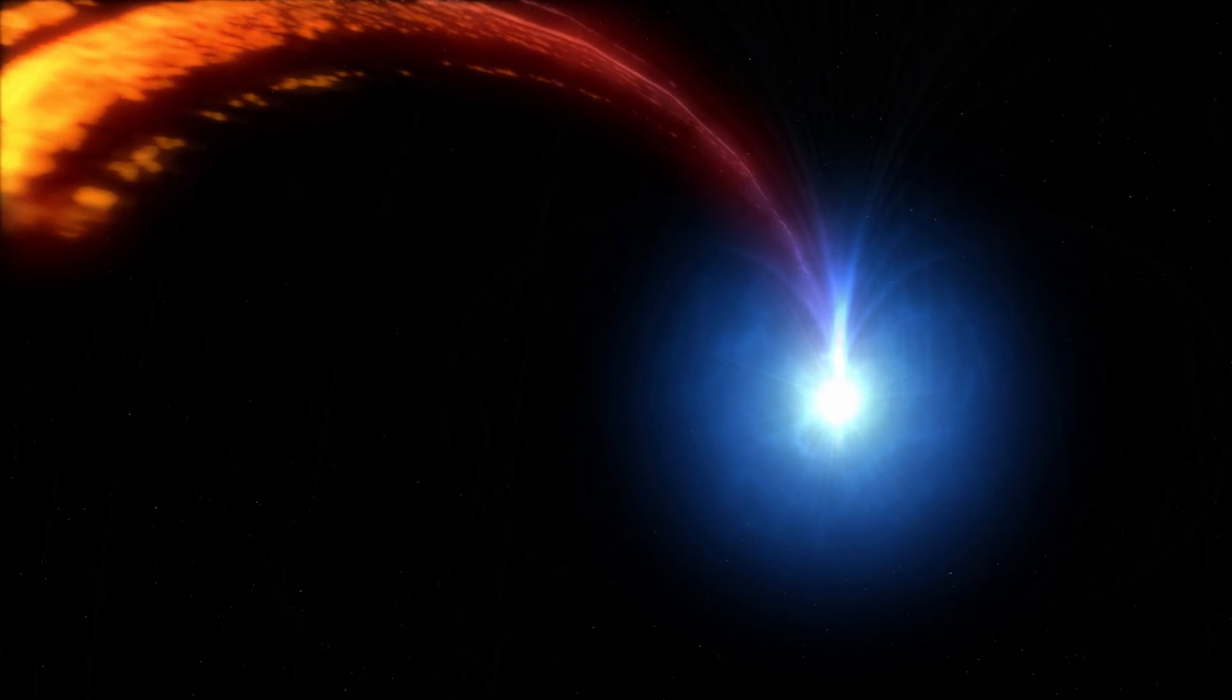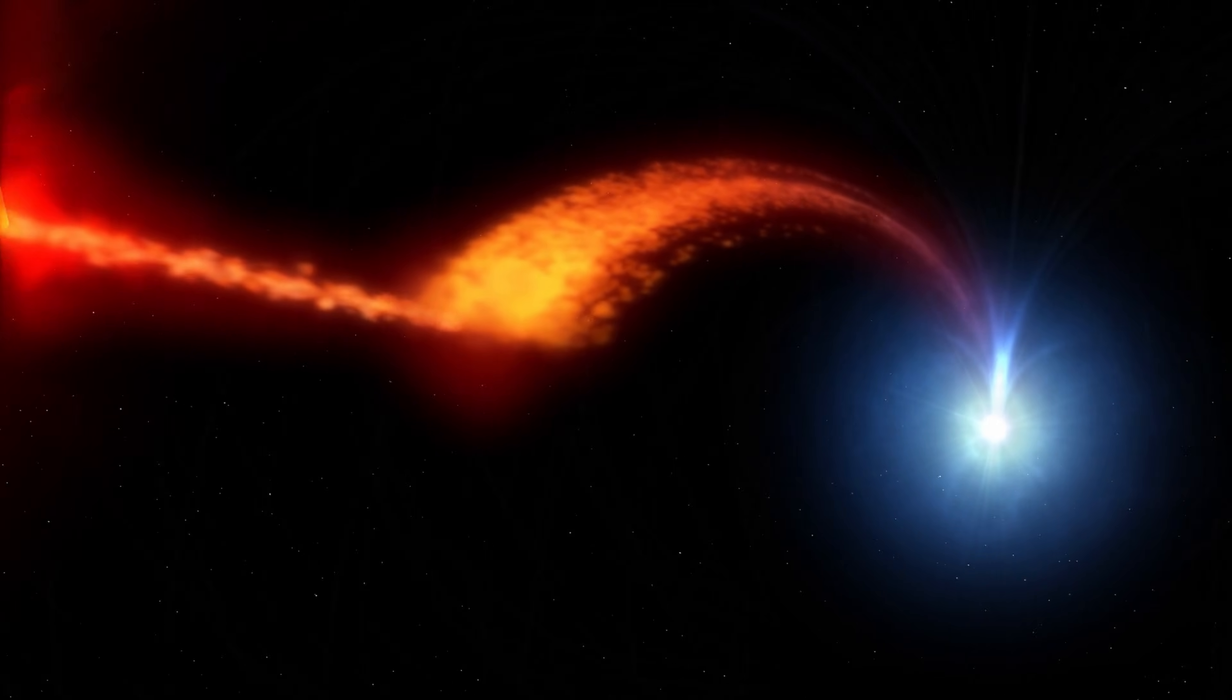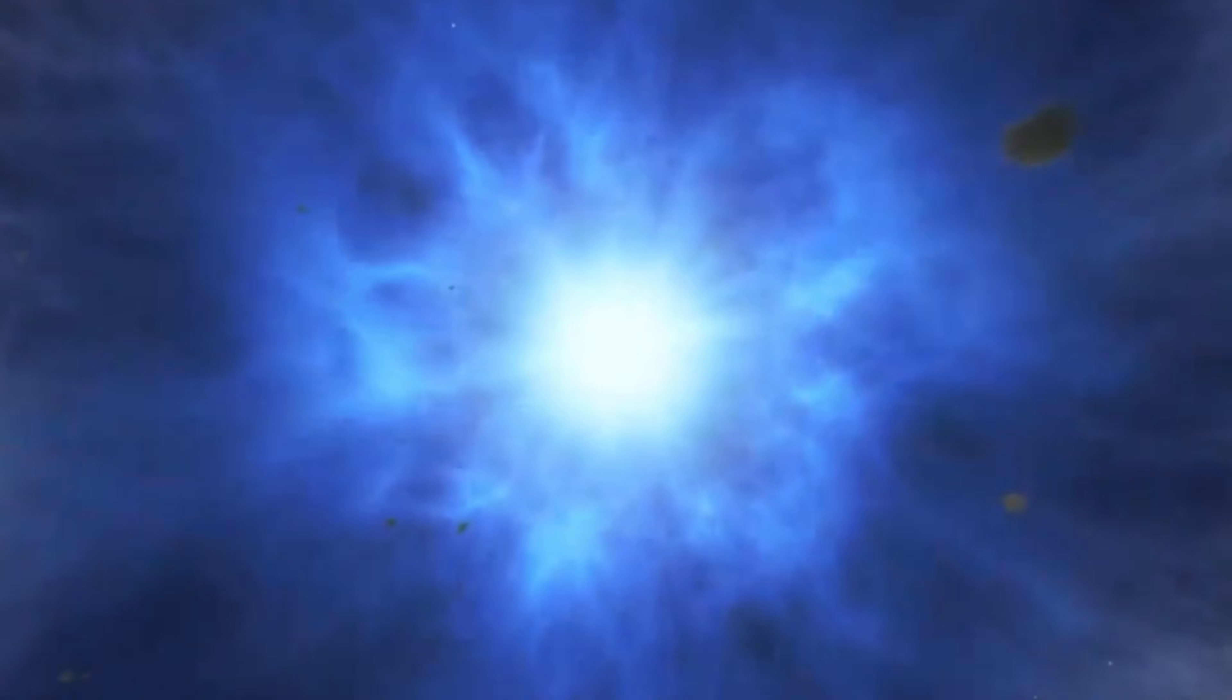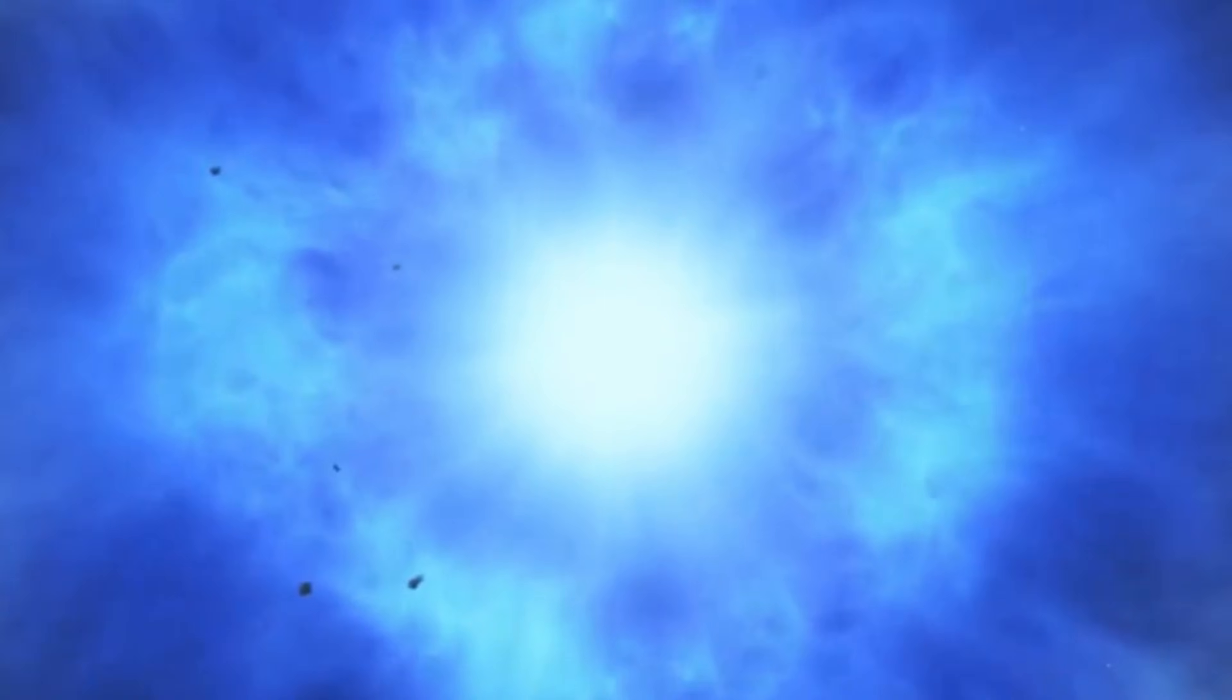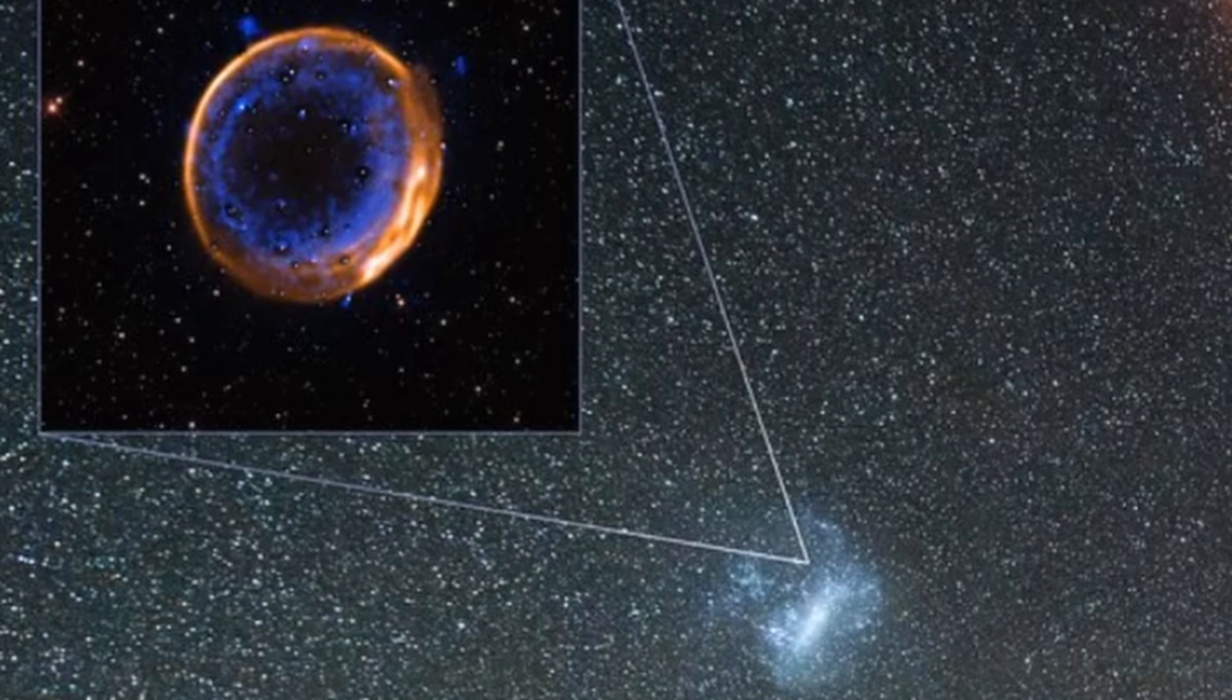Some white dwarfs might explode for other reasons, which would complicate cosmological calculations if confirmed. In this type of model, a white dwarf pulls material, often helium, from the companion star, forming a thick layer on the surface. This helium layer ignites first, creating a shock wave that travels inward, triggering a secondary much larger explosion that destroys the whole star. The white dwarf would not have to reach its critical mass, the Chandrasekhar limit.